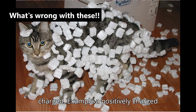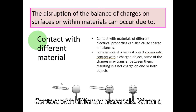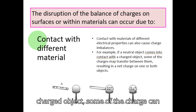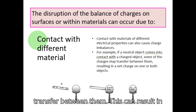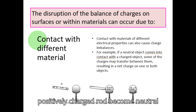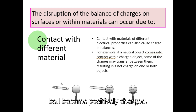For example, a positively charged cat's fur attracts polyfoam. With contact charging, when a neutral object comes into contact with a charged object, some of the charge can transfer between them, resulting in both objects becoming charged. For example, a positively charged rod becomes neutral after it touches a metallic ball, and the ball becomes positively charged.